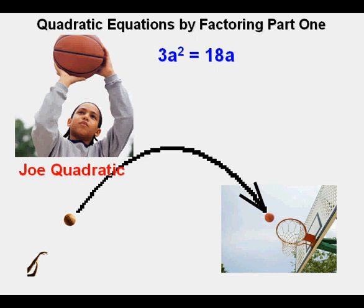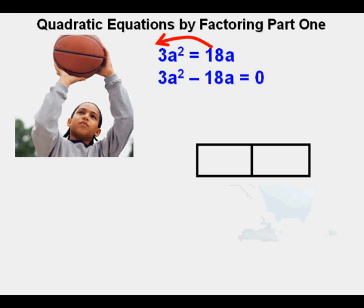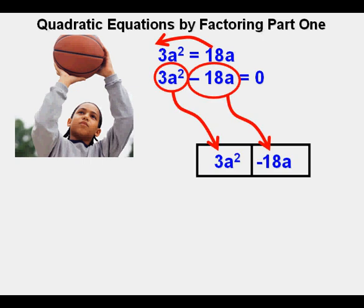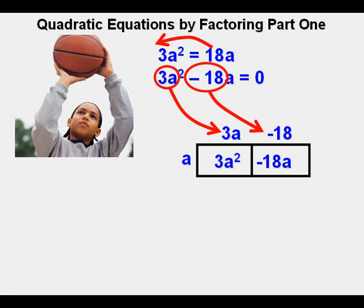Joe will solve this equation by factoring 3a squared equals 18a. The first thing Joe does is to make one side equal 0, and he does that by taking the 18a term on the right side and moving it over to the left side. So now he has 3a squared minus 18a equals 0. He next sets up his box, and since it's a binomial, he needs only a 1 by 2 box. Both terms go into their places inside the box. He next factors out an a and puts it on the left side of the box. He puts the two terms with the a divided out of them on the top of the box, and those terms would be 3a and negative 18.